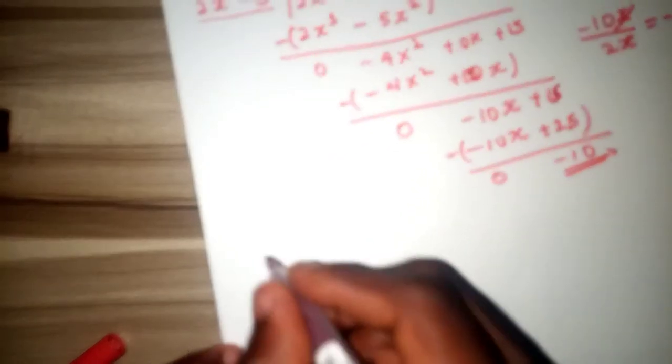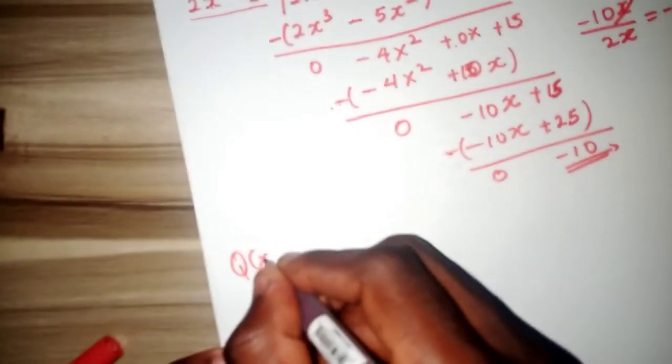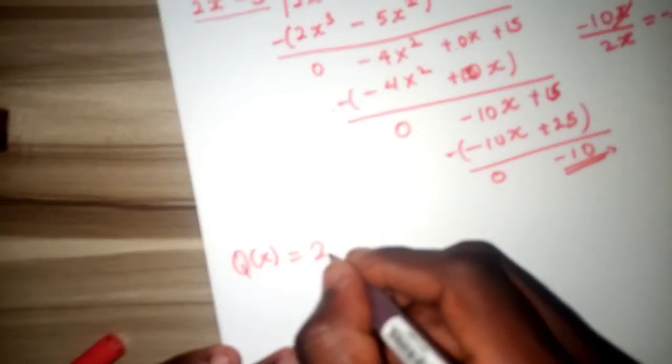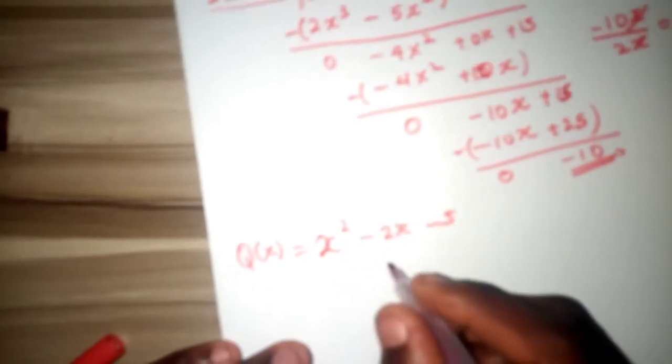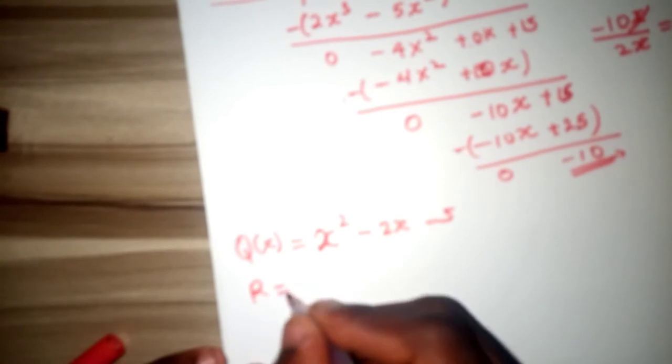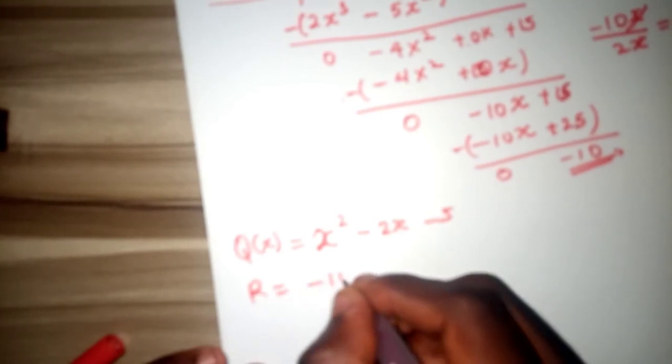So we are done with the division, then we can say the quotient, which is the q of x, is equal to x squared minus 2x minus 5, and the remainder is minus 10.